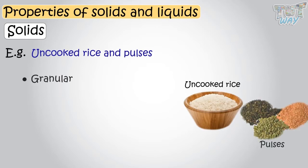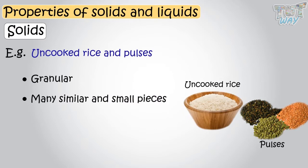Uncooked rice and pulses are solids that are granular, that they have many similar and small pieces.